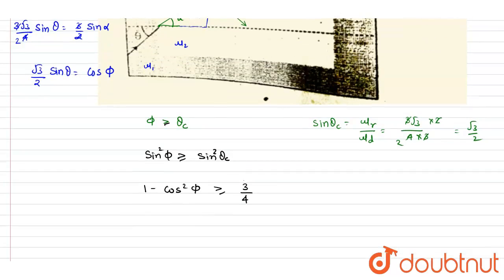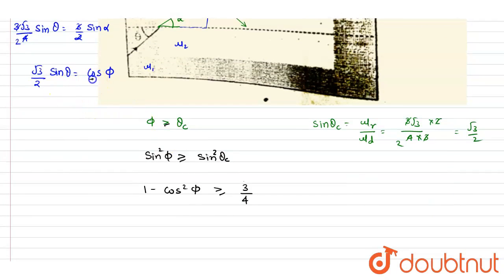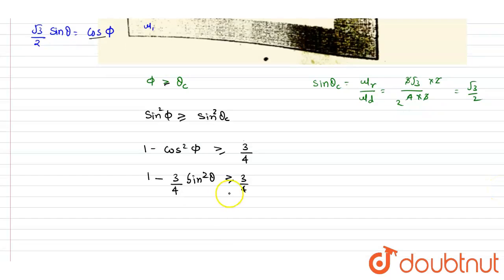So just put the value. If you see, cos φ is this. So I will write down 1 minus sin² θ. Sin² θ is more than 3/4. So if you solve it further, it will be 1 - 3/4, it is 1/4. So 1/4 should be less than or equal to 3/4 sin² θ.